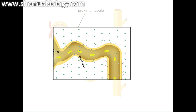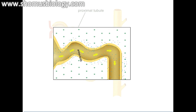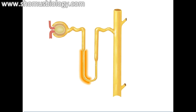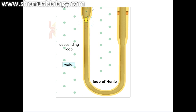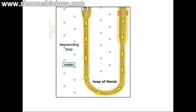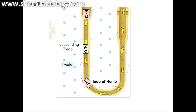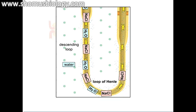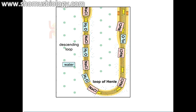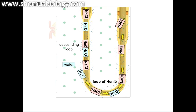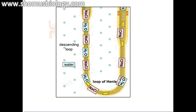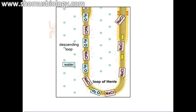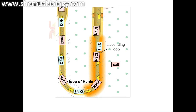This modified filtrate then makes its way down to the loop of Henle, where further modifications occur. The loop of Henle promotes the reuptake of water and salt from the filtrate. The descending portion of the loop of Henle is highly permeable to water but not to salts or other materials. There is an osmotic concentration gradient of salts and urea in the interstitial fluid surrounding the loop, so as the filtrate passes into the salty renal medulla, water leaves the loop by osmosis.